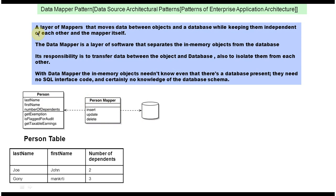If you read this definition again, you'll understand: a layer of mappers that moves data between objects and a database. This mapper is responsible for moving data from the Person object to the database and moving data from the database to the Person object, while keeping them independent of each other and the mapper itself.